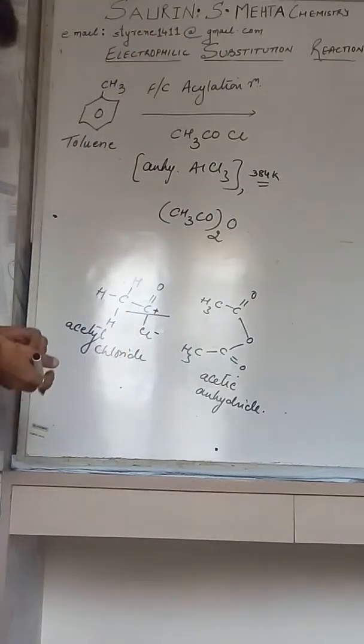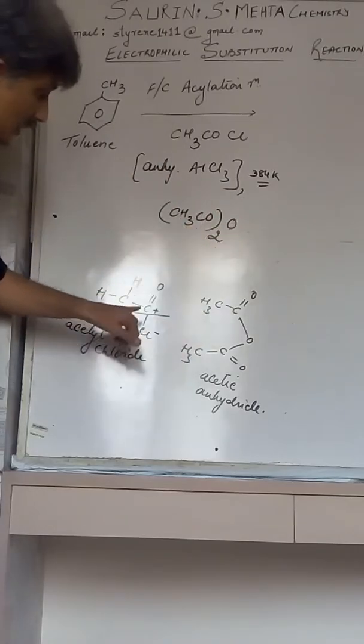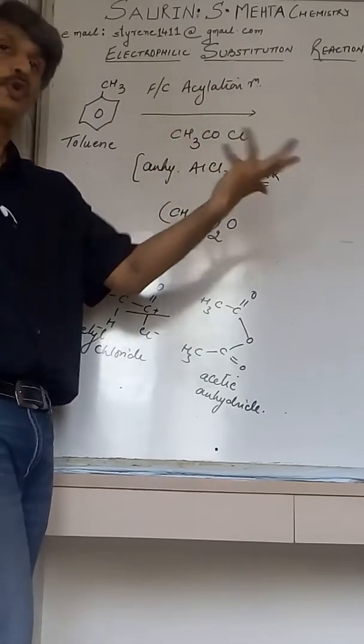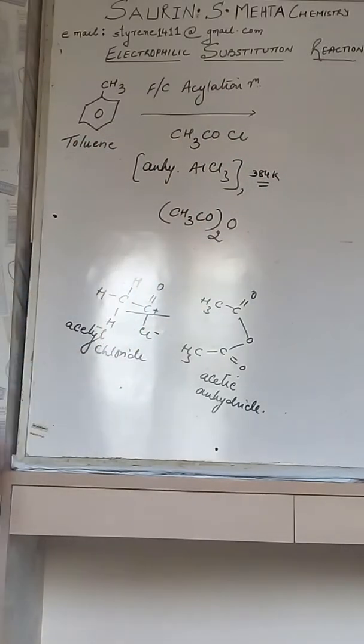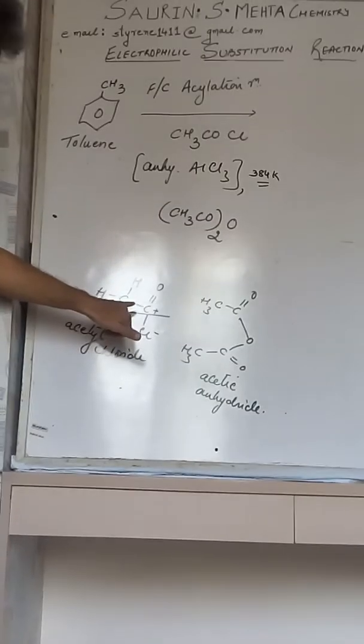As a result you can see CH3CO+ or you can say COCH3+, that is aceto group is generated, which is your electrophile. Same thing we'll talk for this, but first let us complete this one.